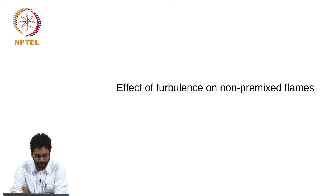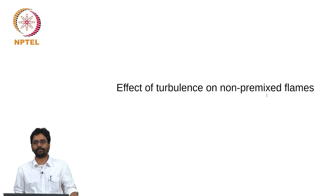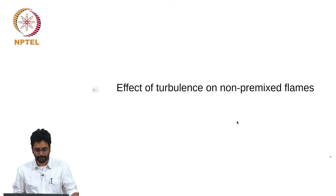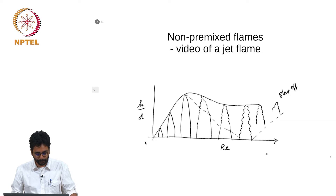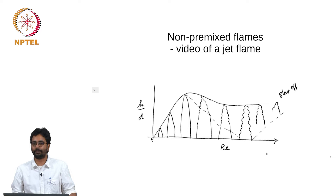We discussed the structure of the laminar non-premix flame and the idea of mixture fraction and the scalar dissipation rate that follows from mixture fraction. Now let us extend this idea to turbulent non-premix flames. We have already discussed this in the relationship between the non-dimensional height of a non-premix flame as a function of Reynolds number.